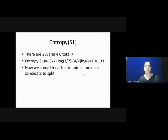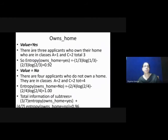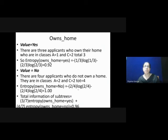Now we can consider each attribute for splitting the reduced dataset. First, we take Ons. For value Yes, there are 3 applicants: 1 in class A, 2 in class C. Entropy of Ons-Yes = minus 1/3 log₂(1/3) minus 2/3 log₂(2/3) = 0.90. For value No, there are 4 applicants: 2 in class A, 2 in class C. Entropy of Ons-No = minus 2/4 log₂(2/4) minus 2/4 log₂(2/4) = 1. Total information of subtrees = 3/7 × entropy(Ons-Yes) + 4/7 × entropy(Ons-No) = 0.96.